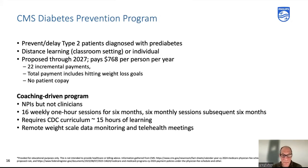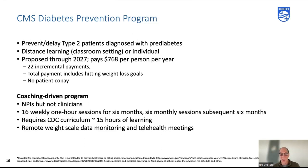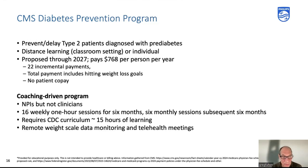The Diabetes Prevention Program is proposed and now finalized through 2027 — a big move. This program was not being utilized or seeing enrollment as much as CMS would have liked, and there was patient dropout. So they wanted to pump it up. The DPP is designed to prevent or delay Type 2 diabetes for patients diagnosed with pre-diabetes. Distance learning, classroom, or individual settings — no longer in-person requirement. Payment is $768 per person per year, reached through incremental payments that include hitting 5% and 9% weight loss milestones.